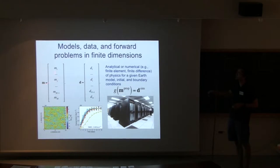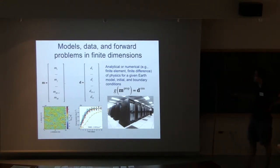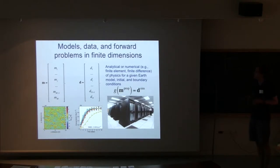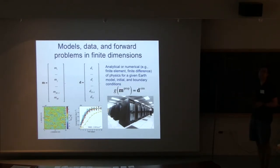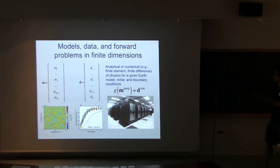m is what we're interested in — it's high dimensional. d is what we measure — also high dimensional. We have a link between the two: that's the forward problem. If I run a model describing groundwater flow at a given location, using solvers you're learning about in the workshop, I can predict some data. We then compare predicted data with observed data, and use the differences to determine which values in m are most likely.